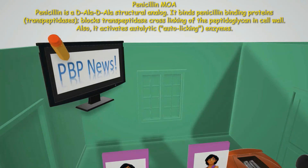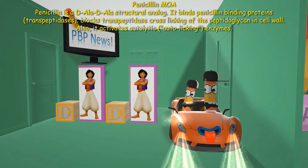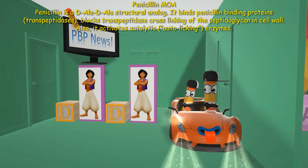By binding to PBP, penicillin blocks transpeptidase cross-linking of peptidoglycan in the cell wall, so the cell wall cannot form. The toy car — the auto — is licking and activating, reminding us that penicillin also activates autolytic enzymes. That's another mechanism of action.